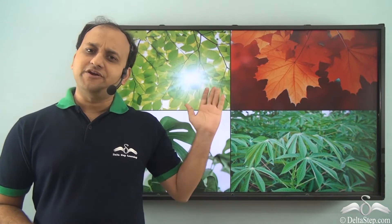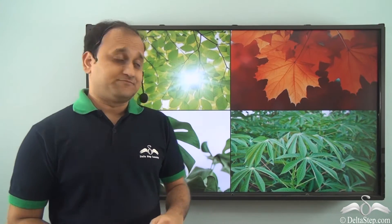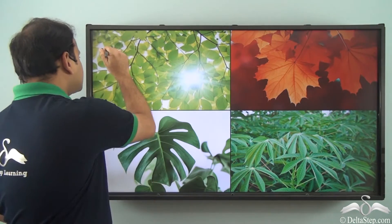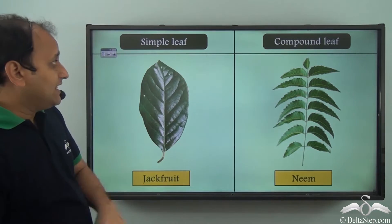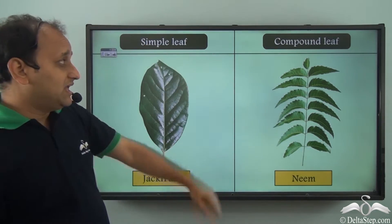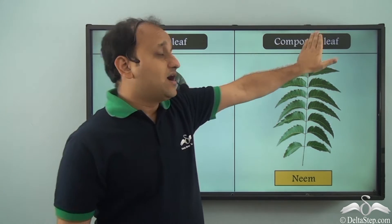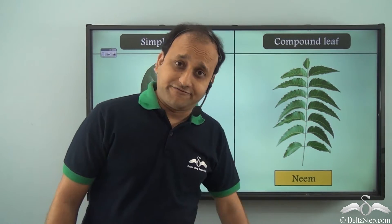We know that different plants have different types of leaves. In fact, we can divide the leaves into two major types: simple leaf and compound leaf.